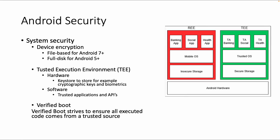Verified boot strives to ensure all executed code comes from a trusted source. If you jailbreak a device, for example, you have to disable verified boot — so this is something you can enable and disable. If your device is not jailbroken and you run an official Android version, then verified boot will verify that the source code is coming from a trusted source and that you're not running malicious software.